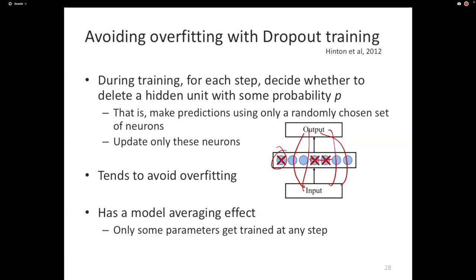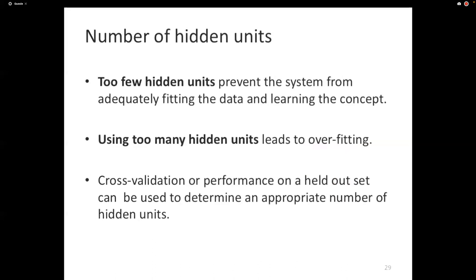Dropout is now standard operating procedure when training neural networks — always use it because it gives better generalization. It introduces one hyperparameter: what fraction of nodes get masked at each step. These hyperparameter values are sometimes buried in footnotes of papers, but they matter because not using the exact reported values may prevent reproducing results.